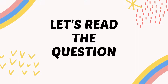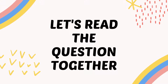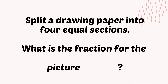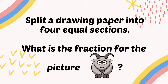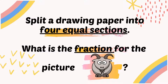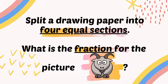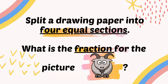Now let's read the next example together. Split a drawing paper into 4 equal sections. What is the fraction for the picture of a goat? Now we're going to find the clues. The clues are: 4 equal sections, the word 'fraction', and the picture of a goat.